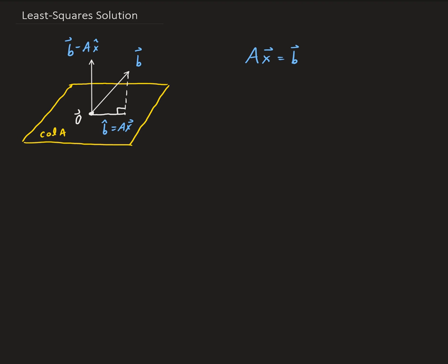So if the vector B is not in the column space of A, then what we have to do is we have to project it onto the column space of A. By projecting B onto the column space of A, we can then find an X that satisfies this equation. This is where the idea of orthogonal decomposition comes into play.